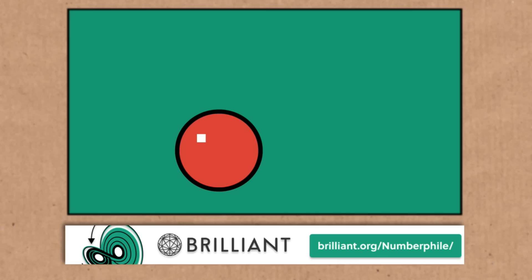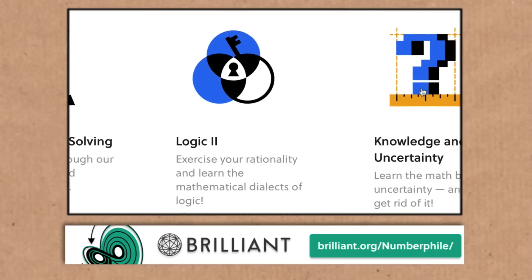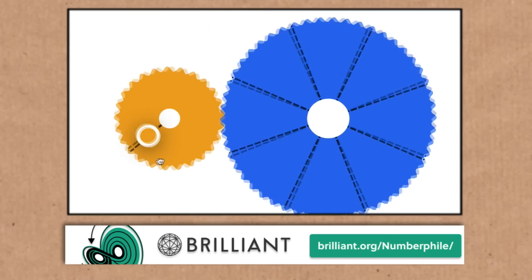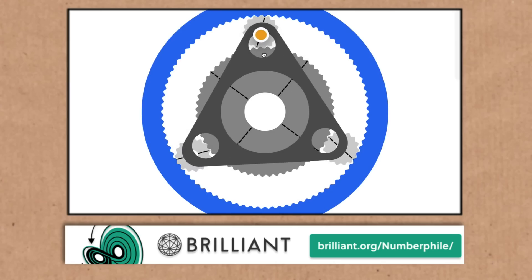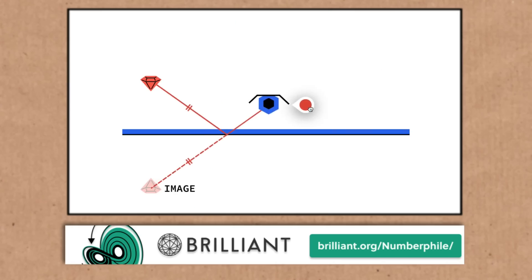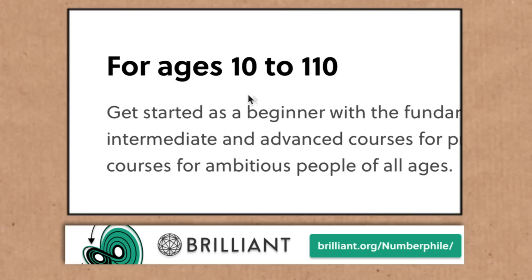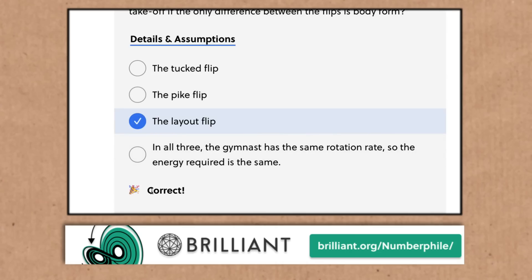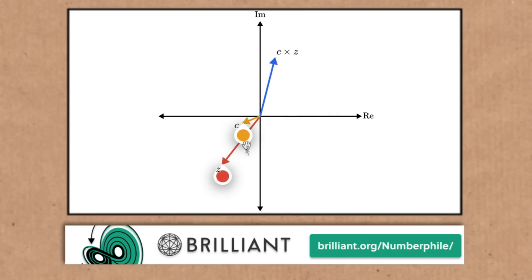This episode has been sponsored by the brilliant people at Brilliant. Makers of interactive online courses, puzzles, problems — things that are going to tickle your brain and make you smarter. I love how interactive everything is, all the sliders and movable parts — they really give you a feeling for the problems and get your mind working in new ways. They say it's suitable for ages 10 to 110, but surely nine and 111 year olds are going to enjoy these too. It's brilliant.org/numberphile — that URL gets you 20% off a premium subscription. You can also give Brilliant as a gift, and there really is something for everyone.